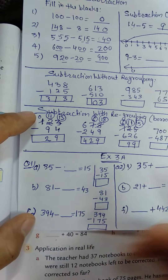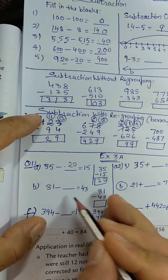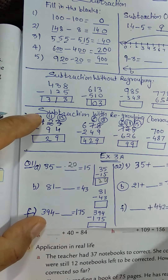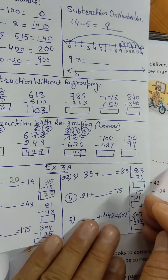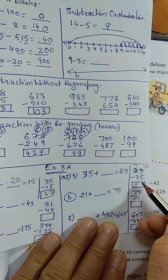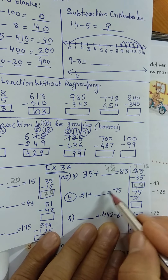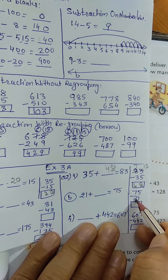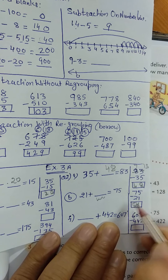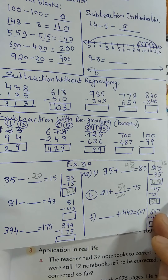So you write in the notebook: 35 minus 10 is 20, write 20 in the blank. For 81 minus 43, subtract and write the answer. For question number 2: 83 minus 13 — here 7, and 13 minus 5 is 8; write 48. For 21 plus 75, the missing number is found by 75 minus 21 equals 54. This way you can complete all parts of questions 1 and 2.